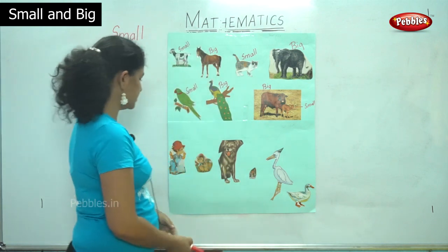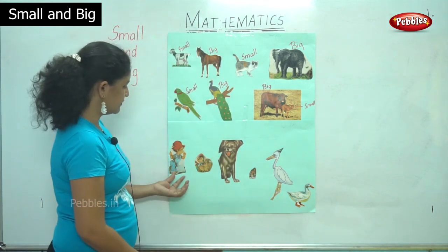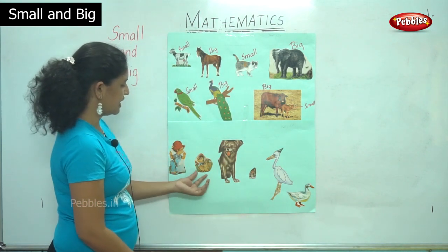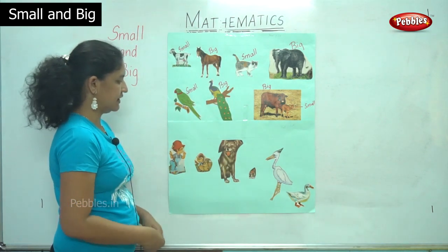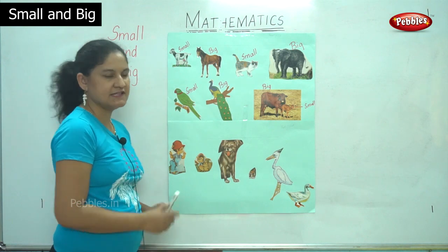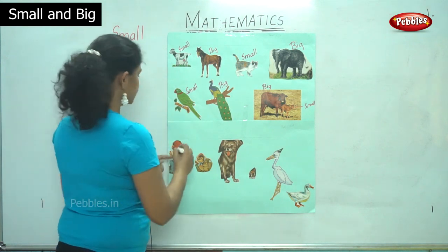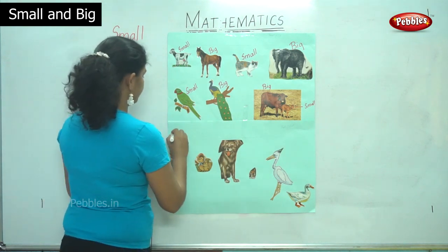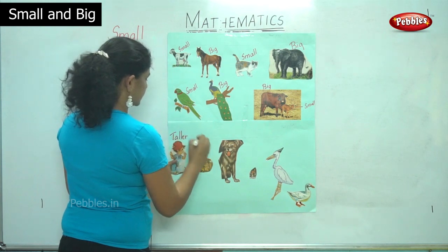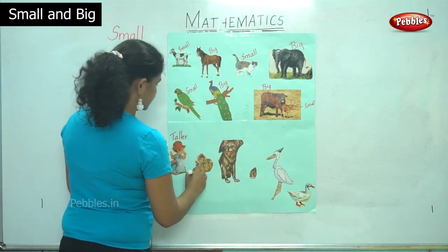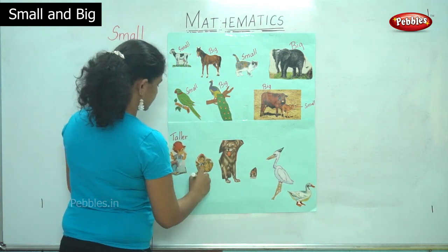Now we have pictures. I have the picture of a boy and the picture of a squirrel. We say that the boy is taller and the squirrel is shorter.